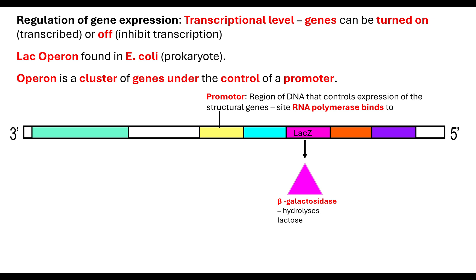We have a gene called the lacZ gene. When it is transcribed and then translated, it results in a protein known as beta-galactosidase. This is an enzyme that's going to hydrolyse lactose. It's a biological catalyst, so by producing this protein it means lactose can be broken down faster.